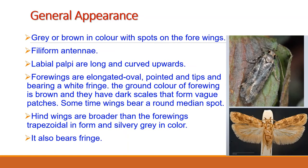To identify Pectinophora gossypiella, keep three points in mind: color, antennal features, and labial palpi. It is a small moth of dark or grey-brown color, about 8 to 9 mm in body length. They bear black and white spots on their forewings, while the hindwings have no color. The antennae are filiform or thread-like, and the labial palpi are long and curved outwards — the labial palpi being part of the labium, the mouth part.